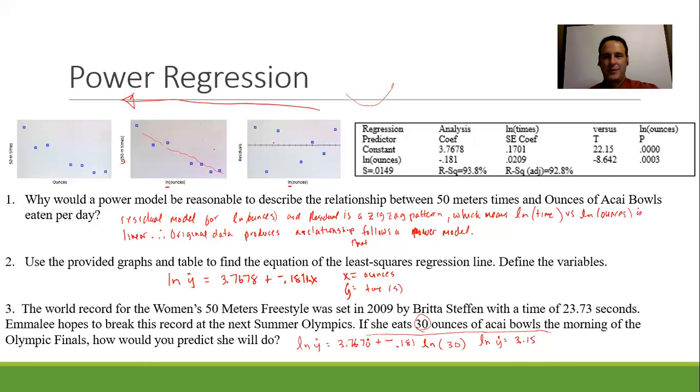And that will give you 3.15 about. Now, that would mean 3.15 seconds, and that would be way too fast, so something's up, and that's because I didn't solve for y, I solved for the natural log of y. So don't forget, we didn't solve for the full y yet, we have that natural log.